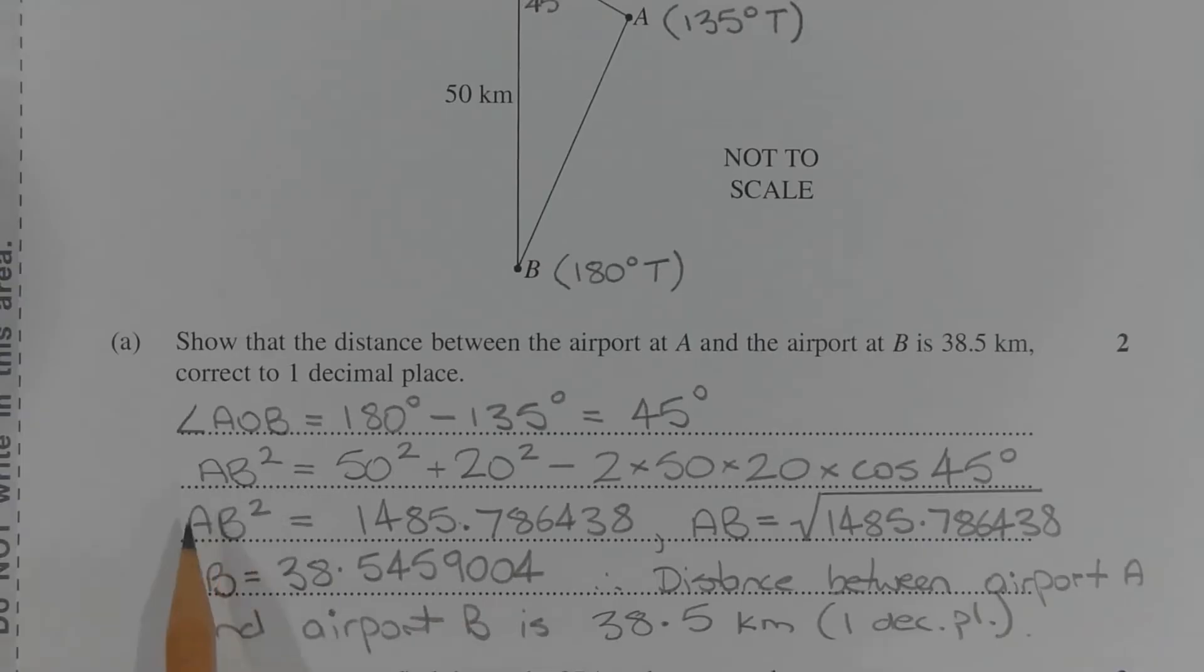To find AB, we need to take the square root of this value here. So AB is equal to the square root of 1485.786438, which equals 38.5459004. Therefore, the distance between airport A and airport B is 38.5km, correct to one decimal place.